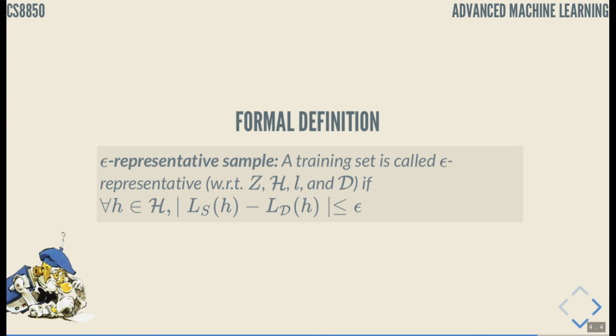A training set is called epsilon representative with respect to domain Z, finite hypothesis set H, generalized loss L and data distribution D, if for all hypothesis in the hypothesis set H the absolute value of the difference between the empirical loss and the true loss is less than or equal to epsilon. This is epsilon representative sample.